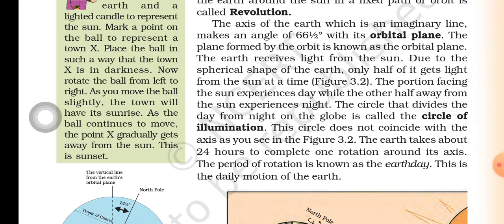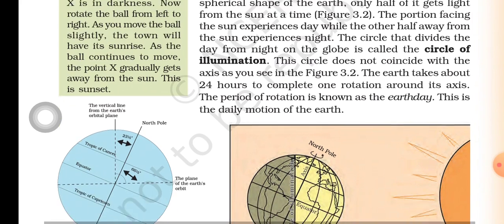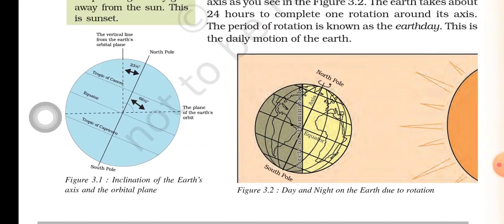Due to the spherical shape of the earth, only half of it gets light from the sun at a time. The portion facing the sun experiences day while the other half away from the sun experiences night. The circle that divides day from night on the globe is called the circle of illumination.